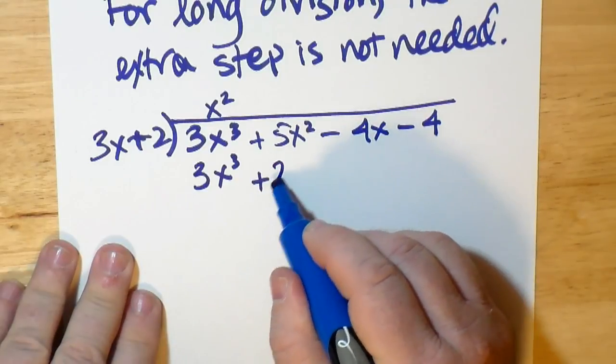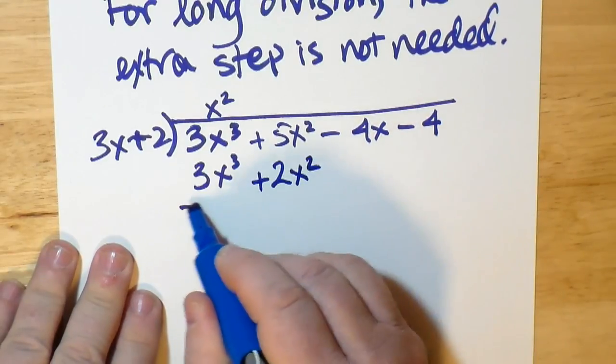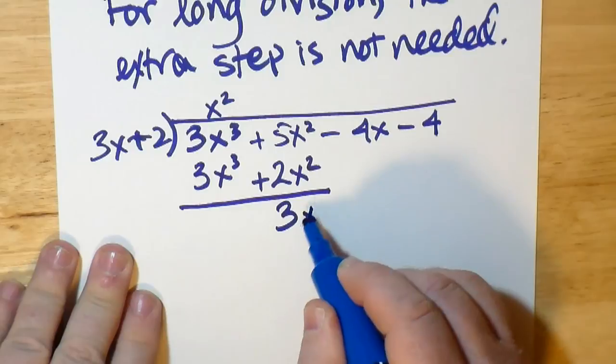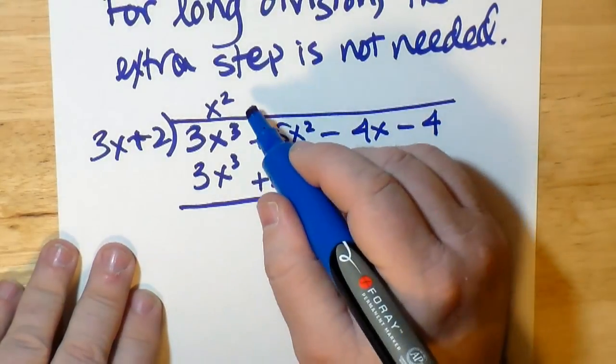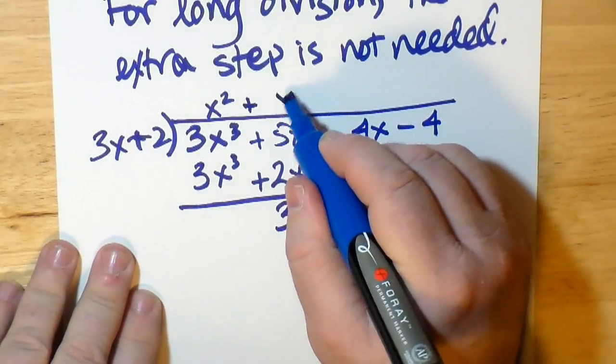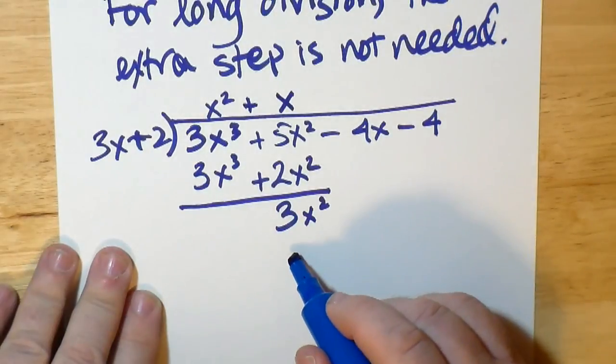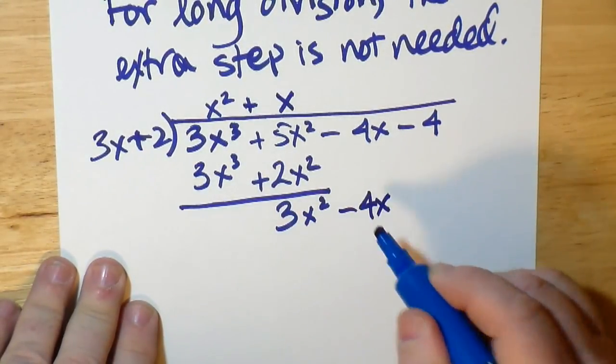3x³ plus 2x². We can see that 5x² minus 2x² gives us 3x². It goes in x times. And we have to bring down the negative 4x.